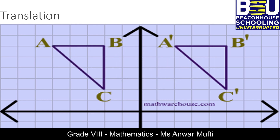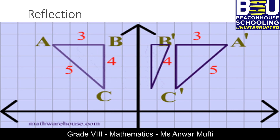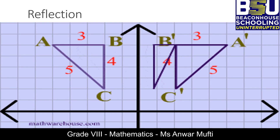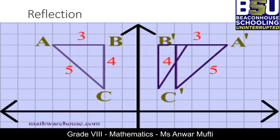Here you can see the movement of triangle ABC to the right-hand side — this transformation is translation. Here triangle ABC is reflecting over the y-axis; A-bar, B-bar, C-bar is the image of triangle ABC. In today's lesson we will focus on reflection in detail.